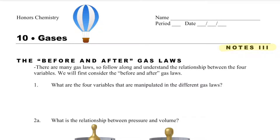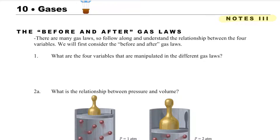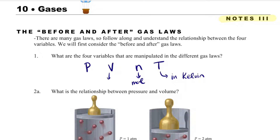In this video, we will talk about the before and after gas laws, as well as the ideal gas law. We will learn how to derive every single gas law just from the ideal gas law. The four variables manipulated with the different gas laws are pressure, volume, moles, and temperature. Moles are represented by N, temperature must be in Kelvin, volume is typically in liters, and pressure is typically in ATMs — but N and T must always be in moles and Kelvin, respectively.